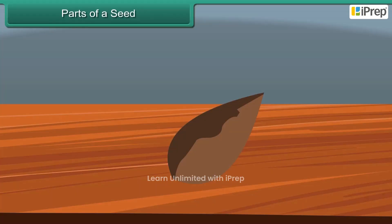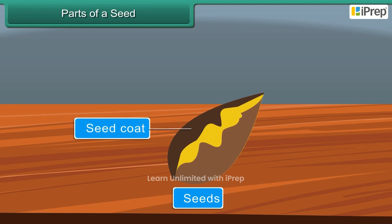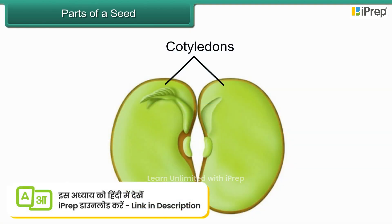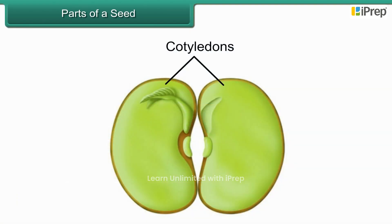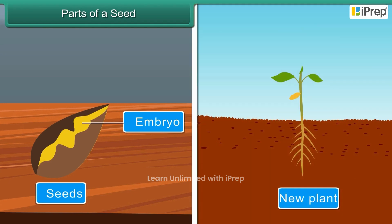A seed has the following parts. The seed coat is the outer covering of the seed — it protects the internal parts. Seed leaves or cotyledons are present inside the seed. The embryo, or baby plant, is present inside the seed and develops into a new plant.